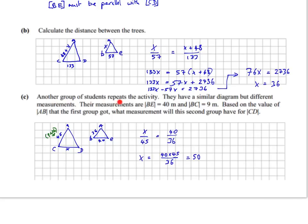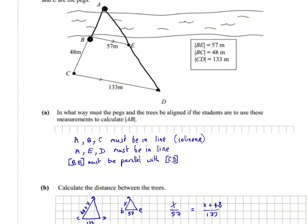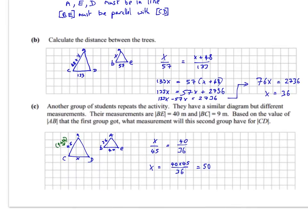So the next part of the question says, another group of students repeat the activity. They have a similar diagram, but different measurements. Their measurements are BE equals 40. So that would be this part here. BC equals 9. So B to C is 9. We'll have to look at the original diagram for that part. So B to C would be 9. So this part here would be 9. But we just found out that this is 36. Based on the value of AB that the first group got, so that was 36, what measurement will the second group have for CD? So they're looking for the length of CD. So we're going to call that X now. And the total length of C to A would be 45, because 9 plus 36 gives us 45. And so we have all the lengths of the sides drawn out here. Again, we separate the triangles.